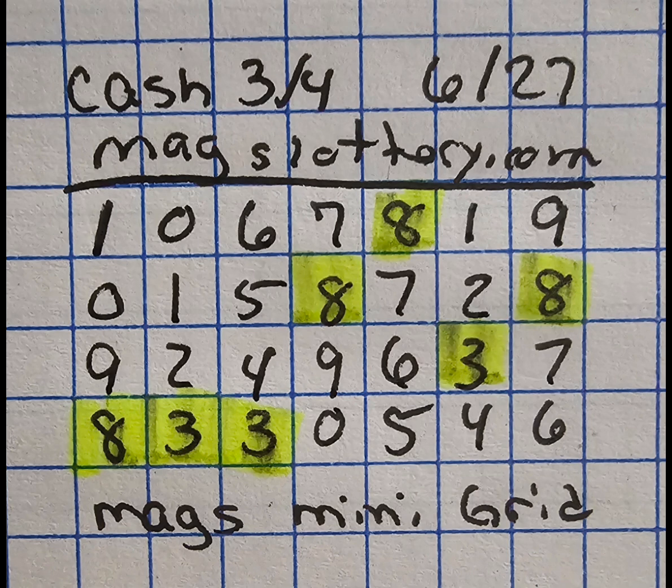If you find it in the base form or mirror form on this chart, then you can use that as a guide on where to look for your next hit. Even if you don't see that number, you can also use your coldest digit, your second coldest digit, or a digit that you feel may roll from your previous draw. Those are good techniques to use in order to know where to start on this chart.